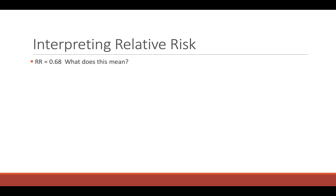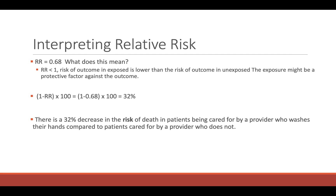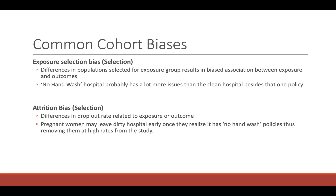We've got our relative risk of 0.68 — what does this mean? Since relative risk is less than 1, the risk of outcome in the exposed is lower than in the unexposed. We convert this value into a percentage: 1 minus the relative risk times 100, which gives us 32%. So there is a 32% decrease in the risk of death in patients cared for by a provider who washes their hands, compared to patients cared for by a provider who does not.